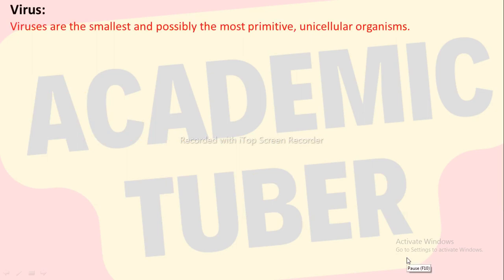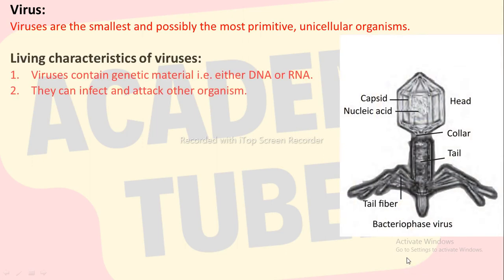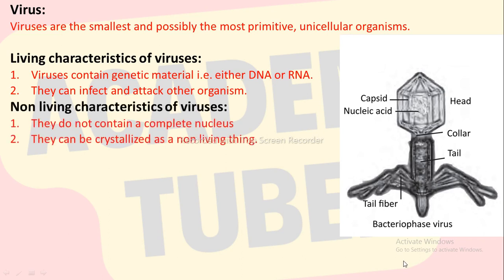Virus. Viruses are the smallest and possibly the most primitive unicellular organisms. Living characteristics of virus: viruses contain genetic material that is either DNA or RNA. They can infect and attack other organisms. Non-living characteristics of viruses: they do not contain a complete nucleus and they can be crystallized as non-living things.